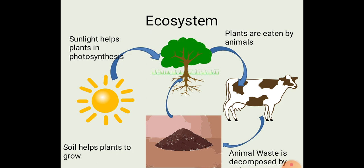For example, in this picture, sunlight is helping plants for producing their food. Plants are eaten by animals. Animal waste is decomposed by soil, and soil is helping plants to grow. So all the living and non-living components are interacting with each other.